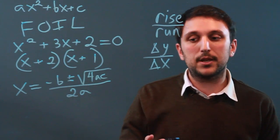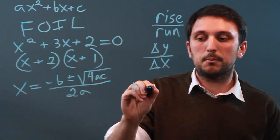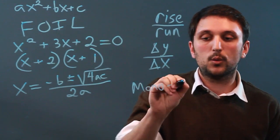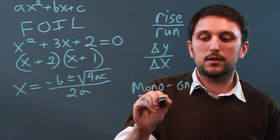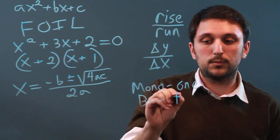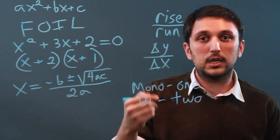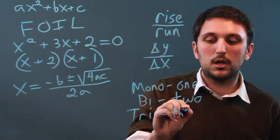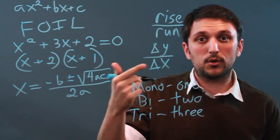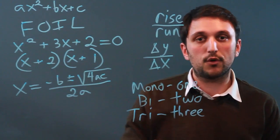And monomials and binomials. So when you see the word mono, think 1. When you see bi, think bicycle, so 2. And when you see trinomial, if you see trinomial, think 3. That's the easiest way to remember your monomial, your binomial, and your trinomial.